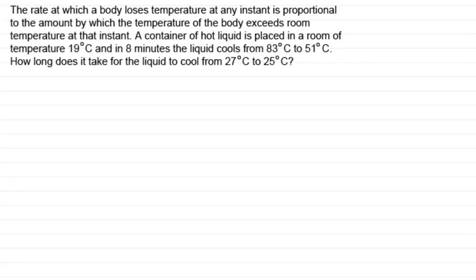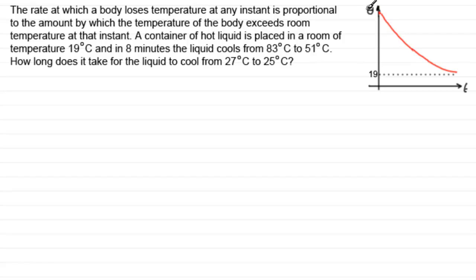To appreciate this problem, what I've got here is what we call a cooling curve. You can see the curve gives us the temperature — I've called it theta here — in degrees C, and how it cools relative to the time T in minutes. It comes down and approaches room temperature at 19 degrees C. It doesn't cross this line; it just approaches it. 19 degrees C here is the asymptote for this particular curve.